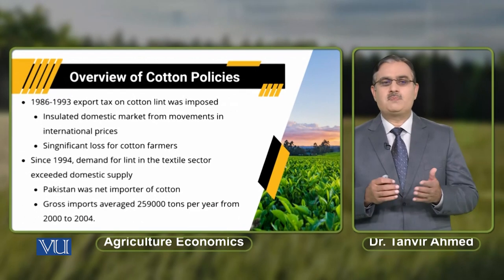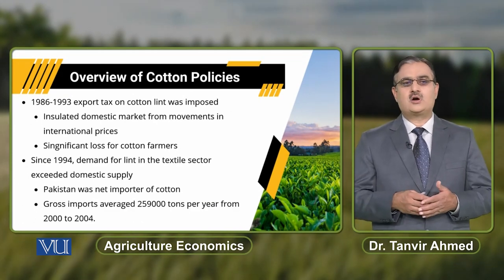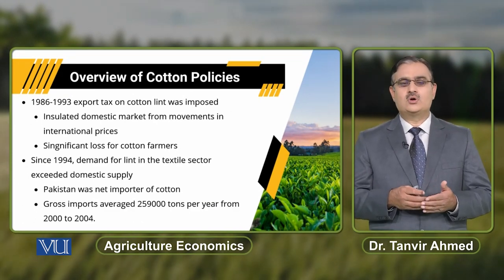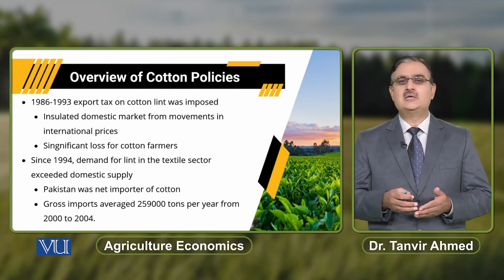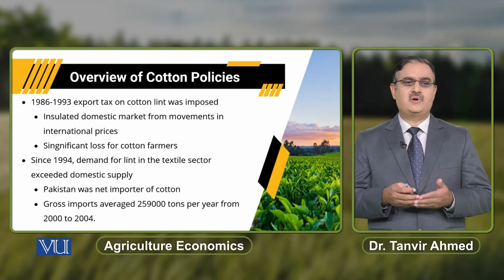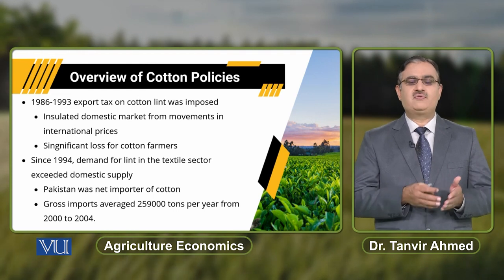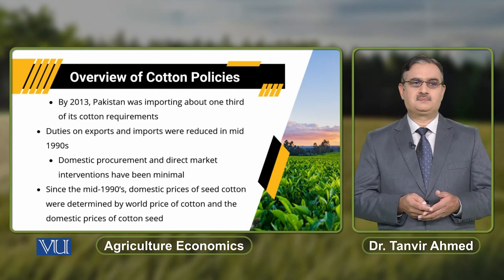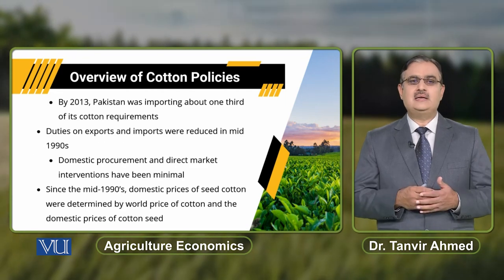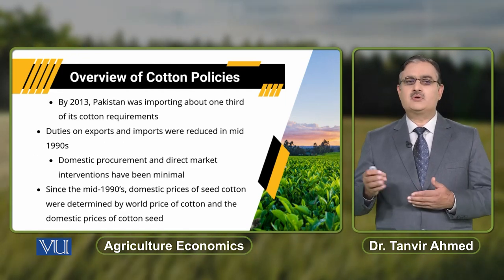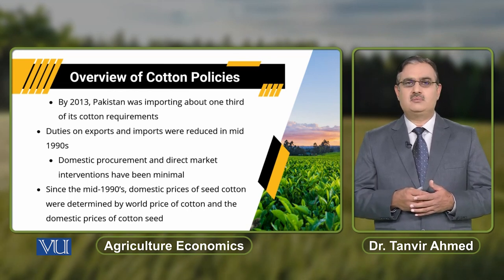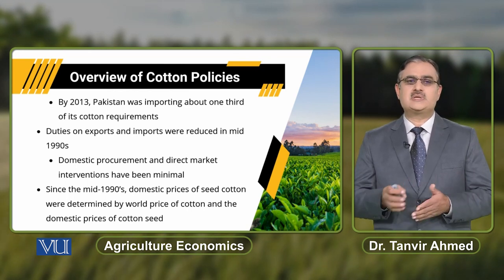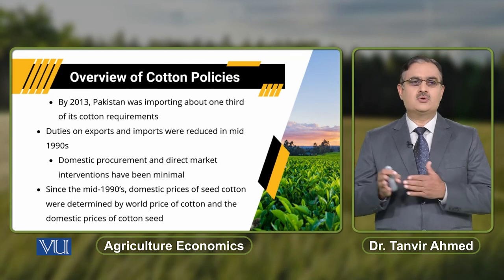Since 1994, demand for lint in the textile sector exceeded domestic supply, so Pakistan became a net importer of cotton. Gross imports averaged 259,000 tons per year from 2000 to 2004, and by 2013, Pakistan was importing about one-third of its cotton requirement.